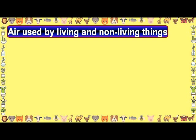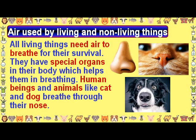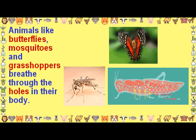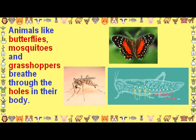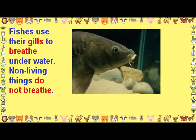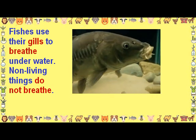Air used by living and non-living things. All living things need air to breathe for their survival. They have special organs in their body which help them in breathing. Human beings and animals like cat and dog breathe through their nose. Animals like butterflies, mosquitoes, and grasshoppers breathe through the holes in their body. Fish use their gills to breathe underwater. Non-living things do not breathe.